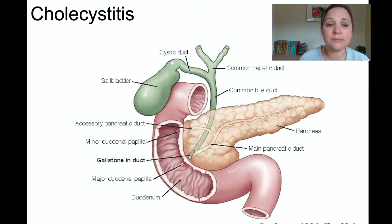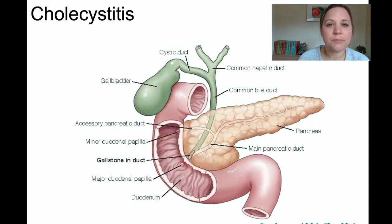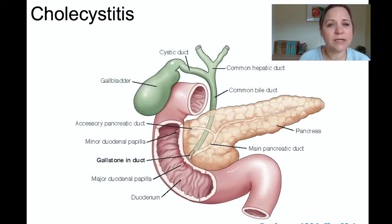Multiple ducts interact with each other here — the common hepatic duct, the common bile duct, the pancreatic duct, the cystic duct — this whole system of tubes delivers these gastric components into the duodenum. Not only can you have gallstones in the gallbladder, you can have them stuck in the cystic duct or anywhere else along the pathway. You can see in this picture a gallstone stuck in the common bile duct.